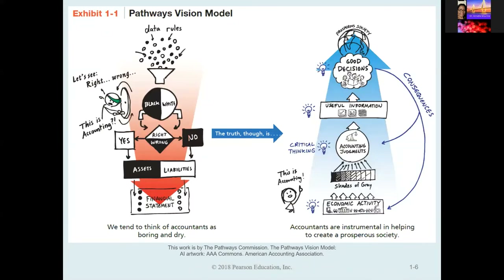Accountants participate in a broad range of activities, such as the investigation of financial evidence, the development of computer programs to process accounting information, and the communication of financial results to interested parties. Accounting is used every day to help make good business decisions. The Pathways Commission created a vision model to help students and the public understand what accounting is and how it's used in business decision making. Accounting starts with economic activities that accountants review and evaluate using critical thinking and judgment.